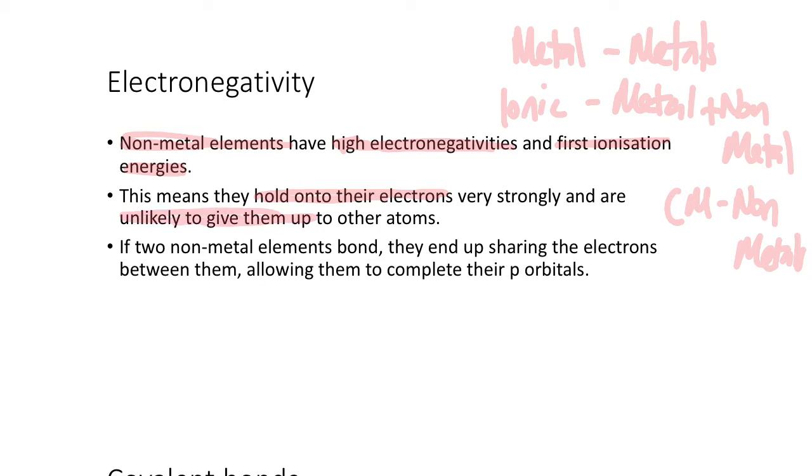So if they're unlikely to give them up, unlike the metals where they can give them up into a sea of delocalized electrons, or unlike the ionic substances where the metal gives to the non-metal, if you're not likely to give them up, then what they're going to do is that they end up sharing electrons, but not in the same way that metals do where they give them all up. They're going to share them between two particular atoms and hold them close. But if they share in between two atoms, it still allows them to complete their p orbitals.